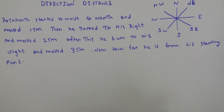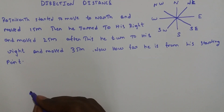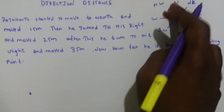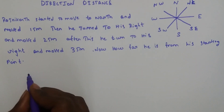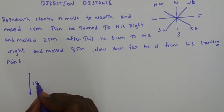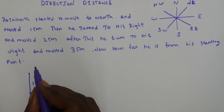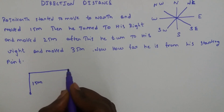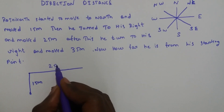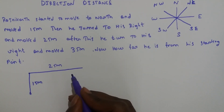Rajnikanth started to move towards North and moved 15 meters. Then he turned to his right and moved 25 meters. From here he moved 25 meters, and after this he turned to his right and moved 35 meters.